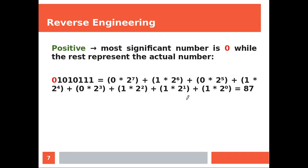Let's have a look at how positive numbers can be represented in a way that CPU can understand. So the most significant number is going to be zero while the remaining seven digits are going to be the magnitude of the number. So then you sum all of this and you get 87.